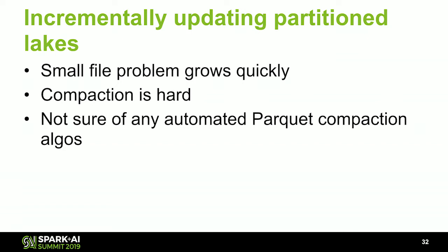This is a recap of incremental updates with partition data lakes. The small file problem grows very quickly. Compaction is also hard — earlier we talked about that elegant solution for compacting something stored in one directory, but how do we compact something that has 20,000 partitions? We probably need to completely recreate the entire partitioned data lake, which is a challenging thing to do, and I'm not aware of any automated Parquet compaction algorithms.